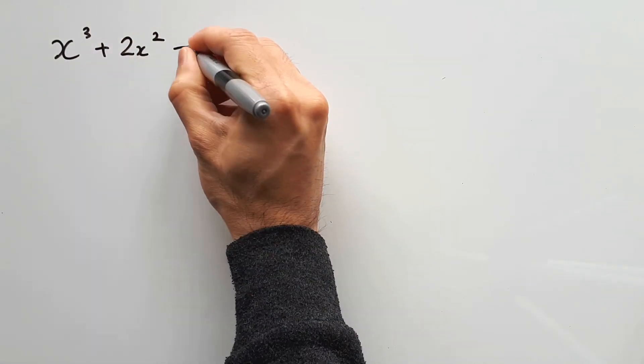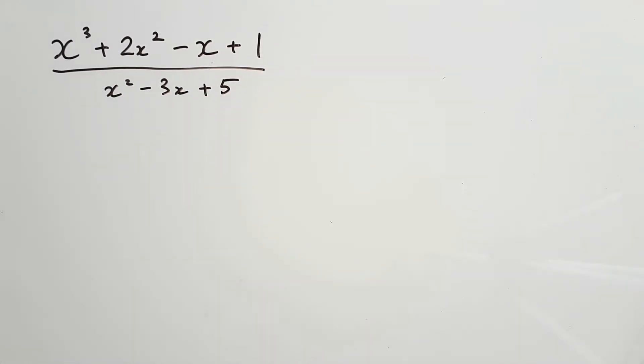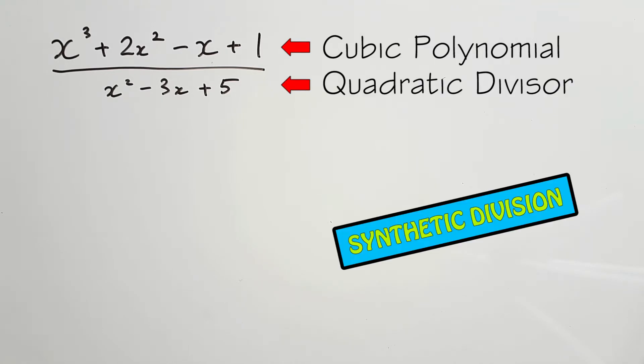x cubed plus 2x squared minus x plus 1 divided by x squared minus 3x plus 5. If you're given a cubic polynomial like this and asked to divide a quadratic expression, you can use synthetic division just like in my previous videos, but you'll have to make a few changes to it.